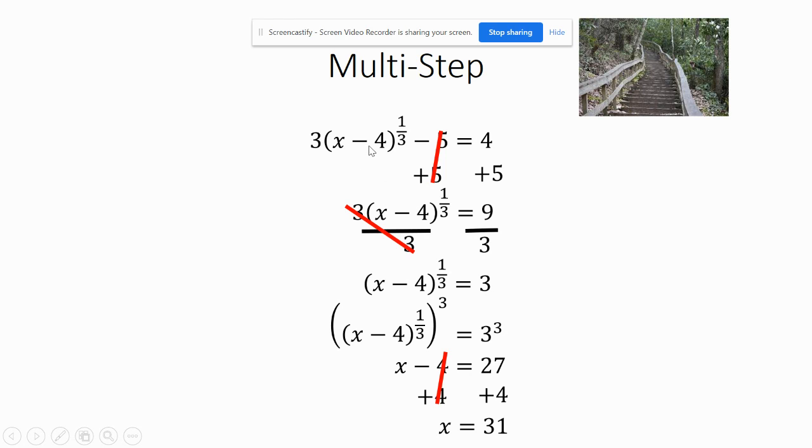If I go back up here to the equation, 31 minus 4 is 27. The cube root of that is 3. 3 times 3 is 9. 9 minus 5 is 4. Woohoo, it works!